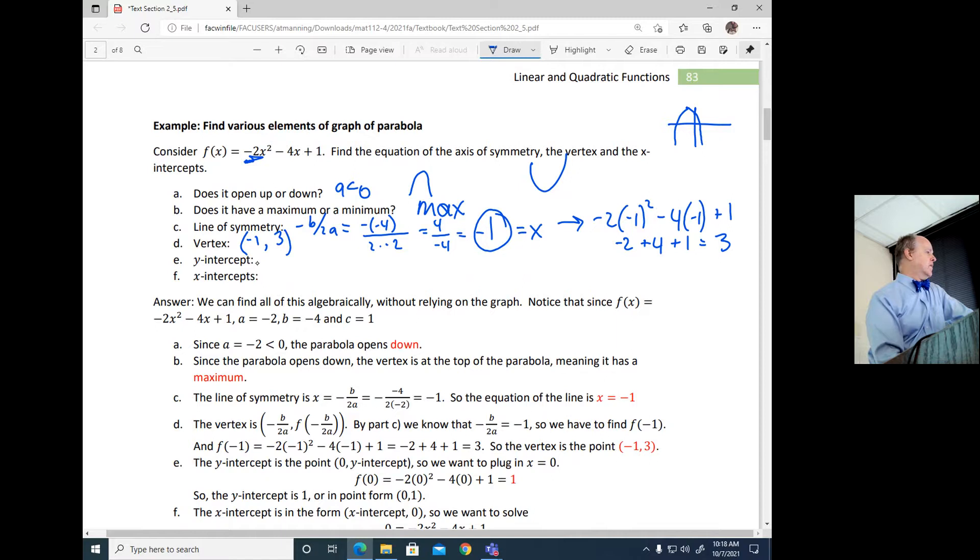Oh, to find the y-intercept? Well, that's when x is equal to 0. Oh, look at that. When x equals 0, I get a 1. So the y-intercept is at 1. X-intercepts. Now I got to use the quadratic formula. It's the easiest way, because x-intercepts means where is f of x equal to 0 or negative 2x squared minus 4x plus 1 equal to 0. So quadratic formula time.